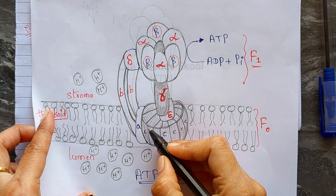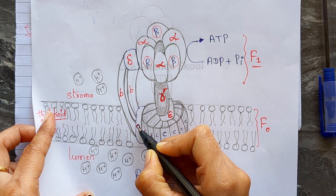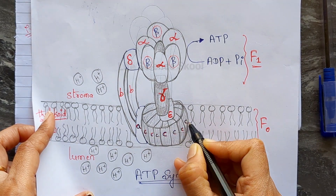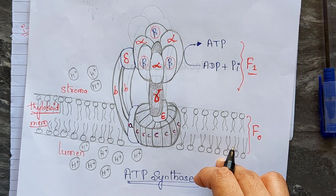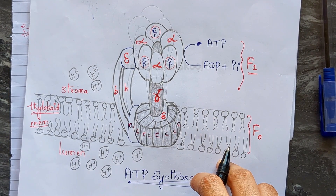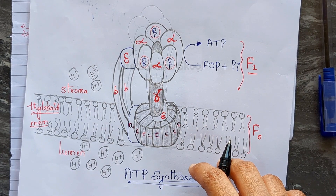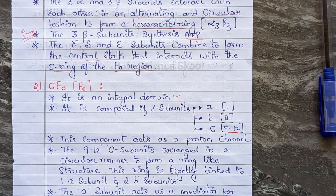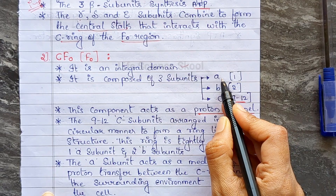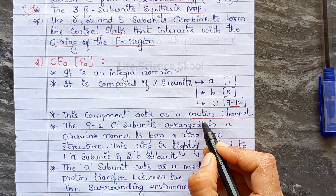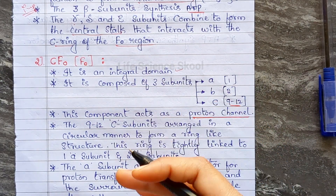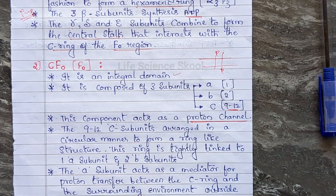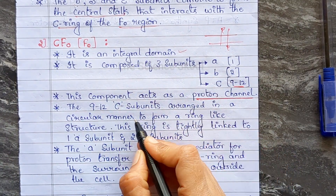Looking at the diagram: subunit a, two b subunits acting like a stalk connection, and the c-ring of 9 to 12 subunits. Interestingly, the overall structure somewhat resembles a trophy. These F-naught components — a, b, and c — act as a proton channel, facilitating the transport of protons from one region to another.